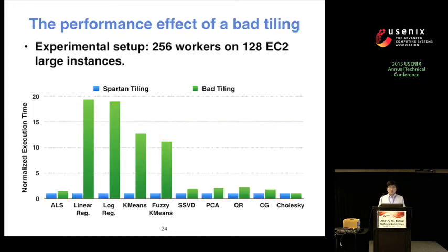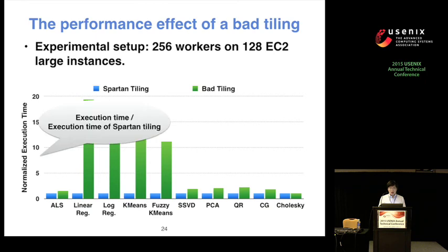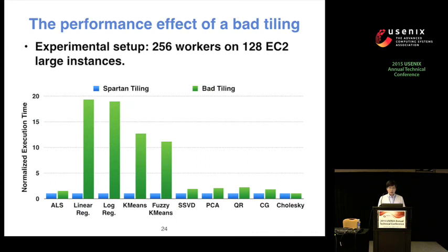To show the performance effect of bad tilings, we randomly chose tilings that are not the best and compared them with tilings chosen by Spartan. The y-axis is normalized execution time, with Spartan's tiling as the baseline. We can see that most applications are at least twice as slow if the tiling is not optimal, confirming that it is important to choose correct tilings.